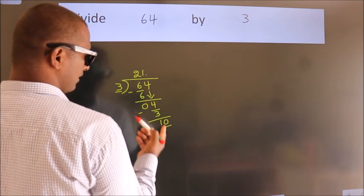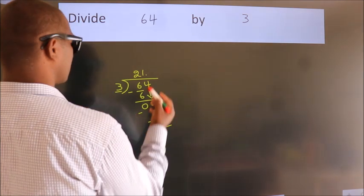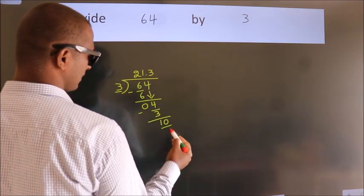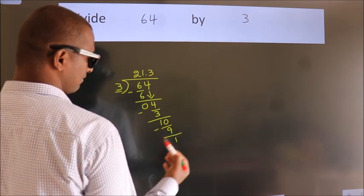So, 10. A number close to 10 in the 3 table is 3 times 3, which is 9. Now we subtract. We get 1.